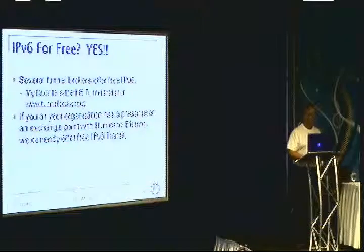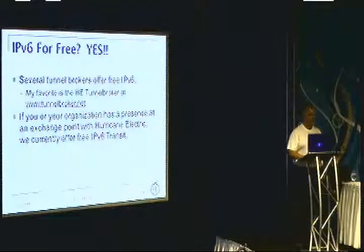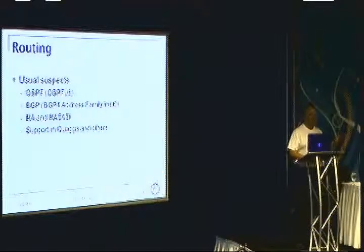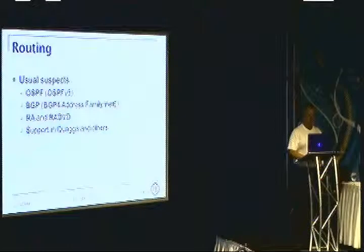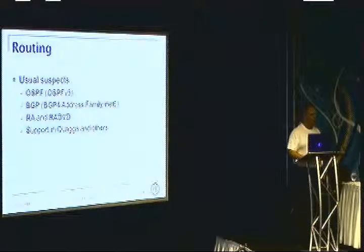You can get IPv6 for free. There are a number of tunnel brokers offering free IPv6; my personal favorite is the Hurricane Electric Tunnel Broker at tunnelbroker.net. Also, if your organization has a presence at an exchange point with Hurricane Electric, we currently offer free IPv6 transit over the exchange — just send a peering request. In terms of routing: OSPF is similar to IPv4 OSPF but requires OSPFv3. BGP uses BGP4 as multifamily BGP with address family inet6 or address family IPv6. Router advertisements on Linux are implemented using the radvd daemon, with additional support in Quagga.